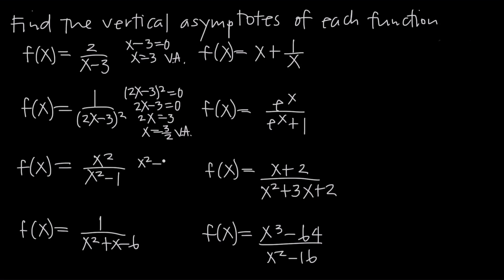Here we'll take x squared minus 1 and set it equal to 0. Adding 1 to both sides gives x squared equals 1. Taking the square root of both sides — be careful here — we get x equals positive or negative square root of 1. The square root of 1 is just 1, so x equals positive or negative 1. In this problem we actually have two vertical asymptotes: x equals positive 1 and x equals negative 1. If we plug in positive 1, we get 1 squared minus 1 equals 0 in the denominator. If we plug in negative 1, negative 1 squared is positive 1, and 1 minus 1 is 0 again. So the domain is all x not equal to positive or negative 1.